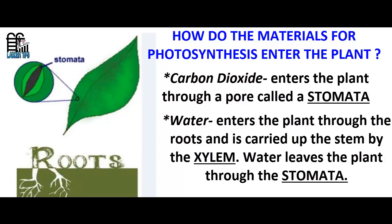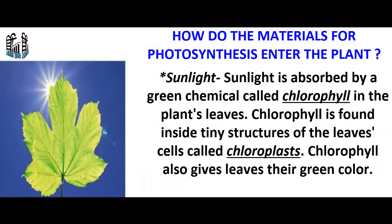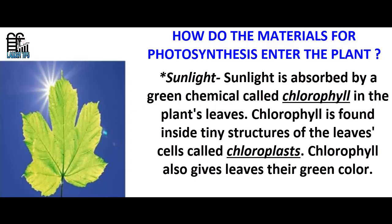Water leaves the plant through the stomata. Sunlight is absorbed by a green chemical called chlorophyll in the plant's leaves. Chlorophyll is found inside tiny structures of the leaf cells called chloroplasts.